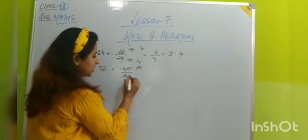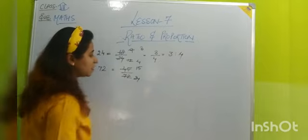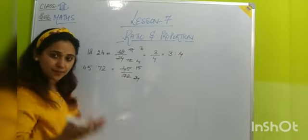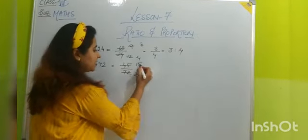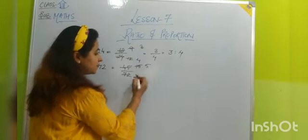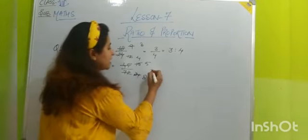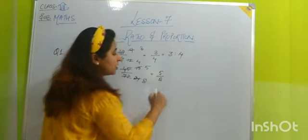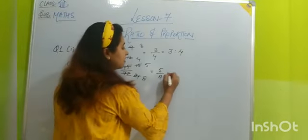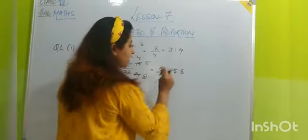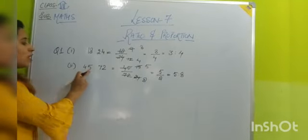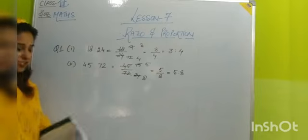3 15s are 45, 3 24s are 72. Now this is the simplest form. So 5 ratio 8 is the simplest form of 45 ratio 72.